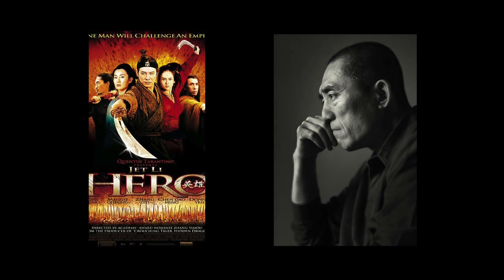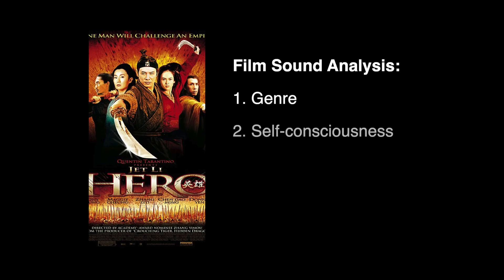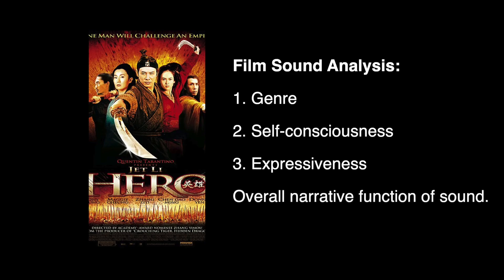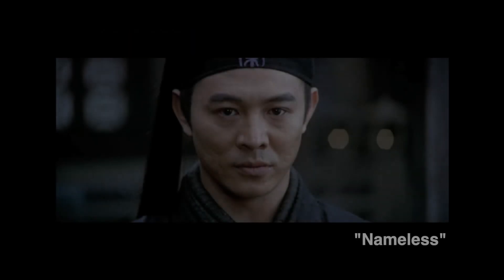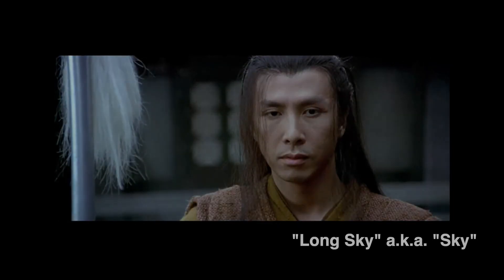The 2002 Zhang Yimou film Hero is well known for its compelling narrative and breathtaking visuals by cinematographer Christopher Doyle. In this video, I intend to break down the incredibly intricate sound design of the film in three aspects: genre, subconsciousness, and expressiveness. Overall, I will also analyze the narrative functions of the film's sound by examining part of a fight sequence between the main protagonist Nameless and his opponent Long Sky, or Sky in short. So let me drop you right into the action.